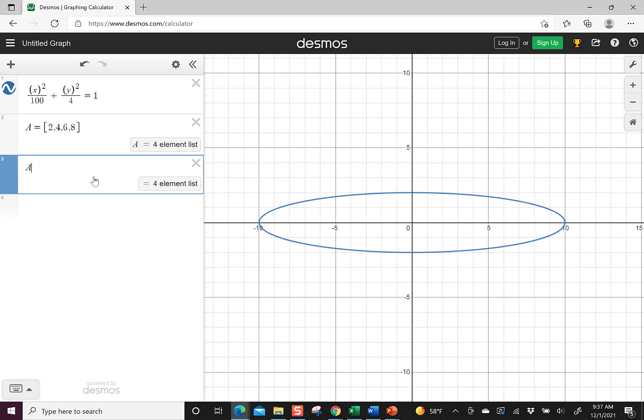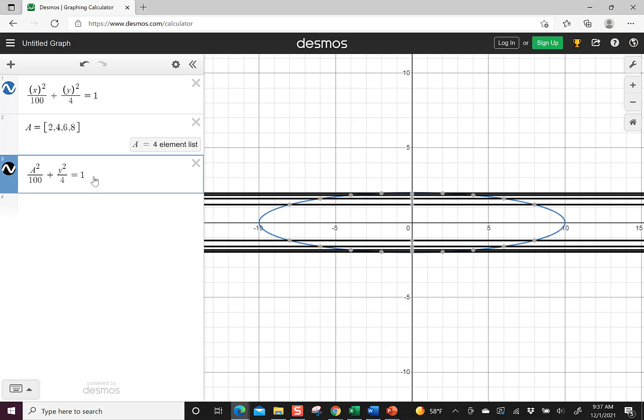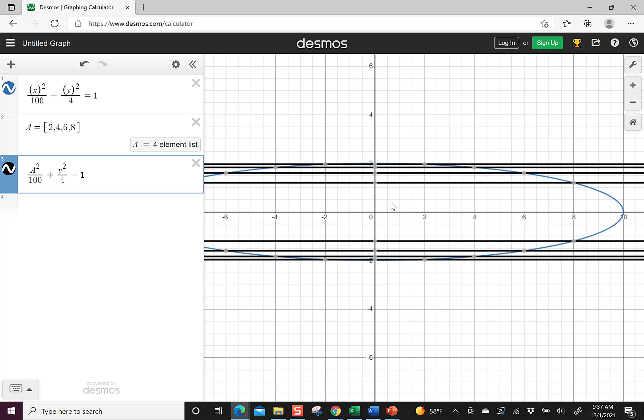So I'm going to write this as a squared divided by 100 plus y squared because then it will figure out the y for me, divided by 4 is equal to 1. So it will substitute in the 2, the 4, the 6, the 8 and you can see it in the graph that it told me like where it intersects.